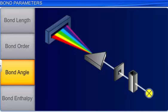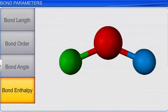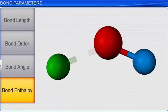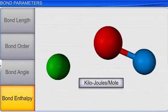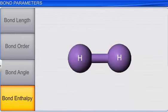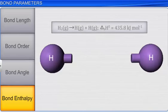Another bond parameter, bond enthalpy, is defined as the amount of energy required to break one chemical bond between two gaseous atoms in a molecule. It is expressed in kilojoules per mole. For example, the energy required to break the bond between the two atoms of a hydrogen molecule is 435.8 kilojoules per mole.